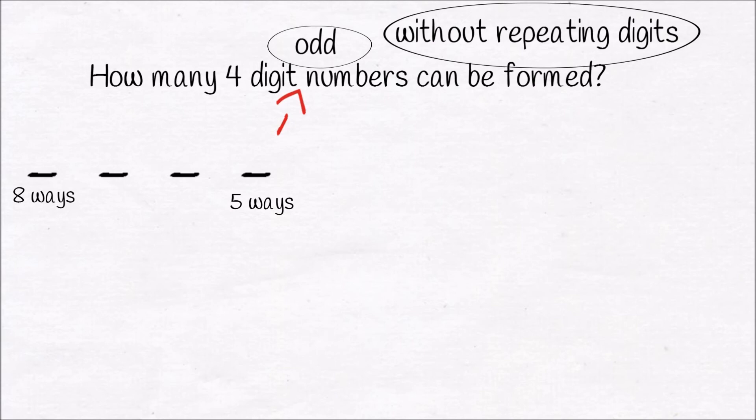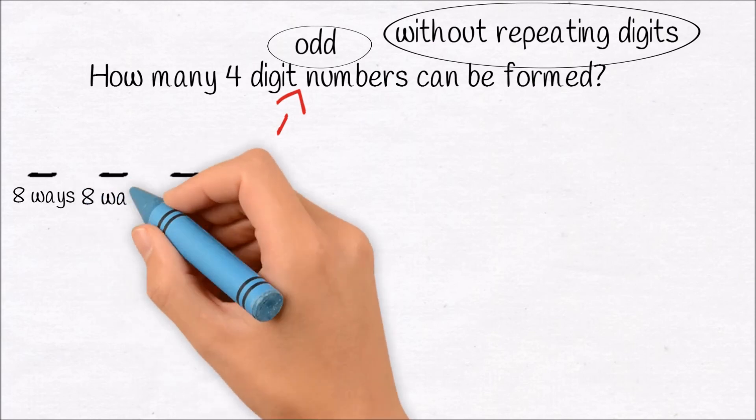Originally, the 100's position could have been filled by 10 digits. But since digits cannot be repeated, we cannot fill it in 10 different ways. 1 digit is consumed by the unit position, 1 is consumed by the 1000's position. So this position can be filled only in 8 ways.